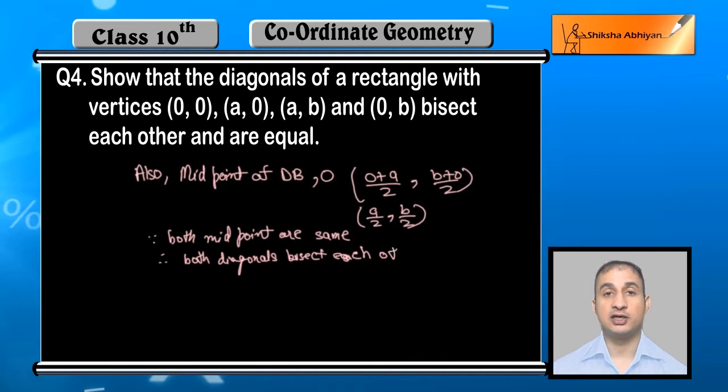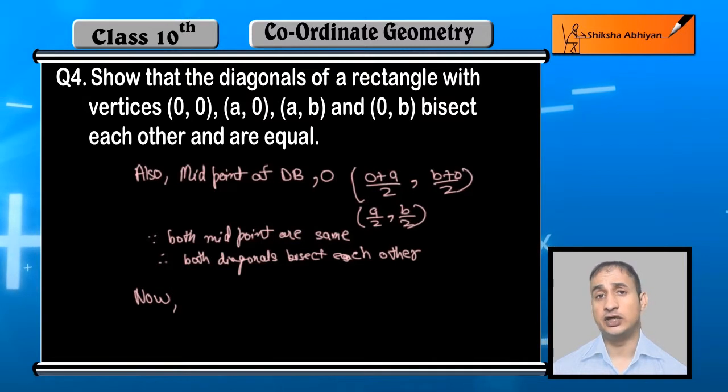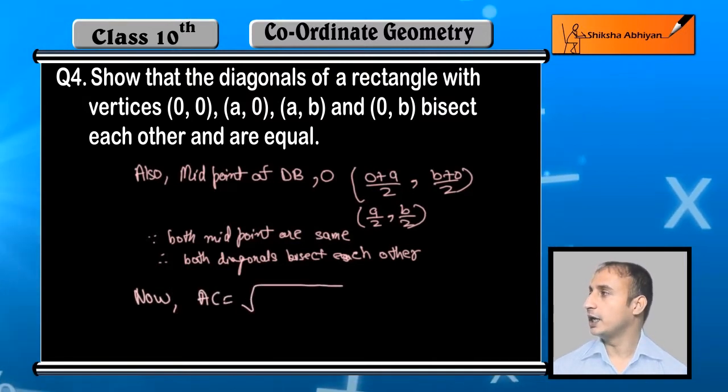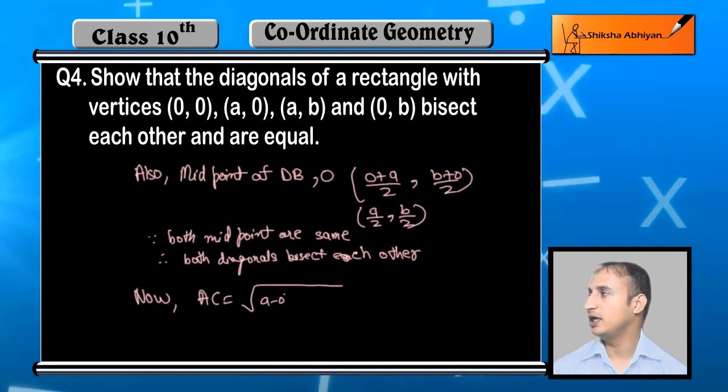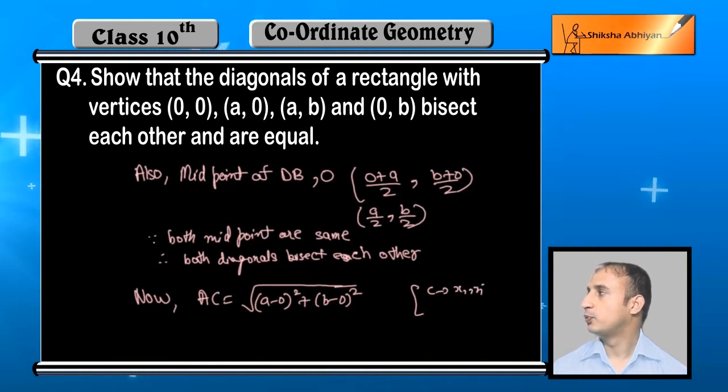Now students, we need to show they are equal in length, so we'll use the distance formula and see if they are equal or not. First, diagonal AC: apply the distance formula. (a-0)² + (b-0)² where C is (a,b) as (x2,y2) and point A is (0,0) as (x1,y1).